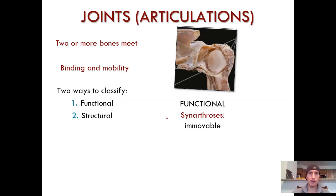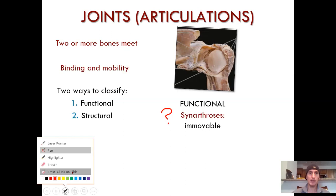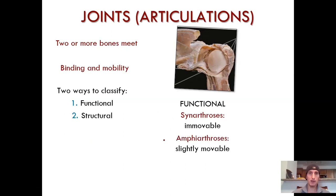Can you think of an immovable joint in your body? Pause the video. How about the joints holding together the bones of your skull? They are immovable — at least I hope they are. Can you think of a joint that is slightly movable in your body? I like the pubic symphysis that links together your two coxal bones anteriorly — your hip bones.